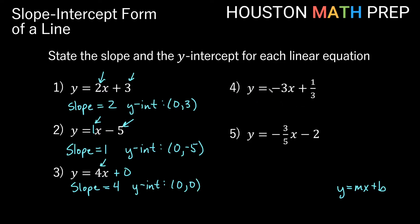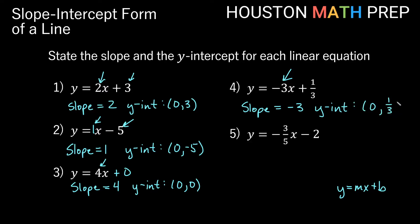Over here, y equals negative 3x plus 1 third. Our m is negative 3, so our slope is actually negative this time — it's negative 3. Our y-intercept, if b is 1 third, is the point (0, 1/3). That's where we go through the y-axis on this one.